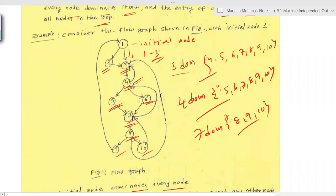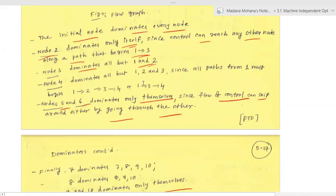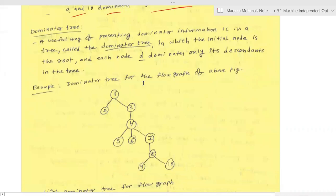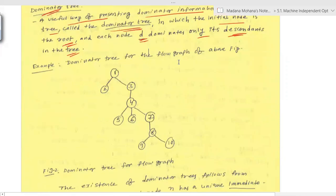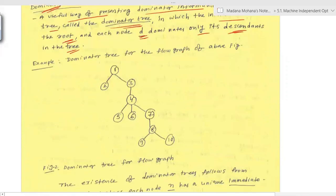These dominators can be represented as a dominator tree. A dominator tree is a useful way of presenting dominator information, in which the initial node is the root and each node d dominates only its descendants in the tree — the outgoing nodes after d are the descendant nodes. Let us see the dominator tree for the above flow graph.